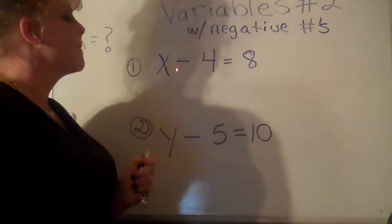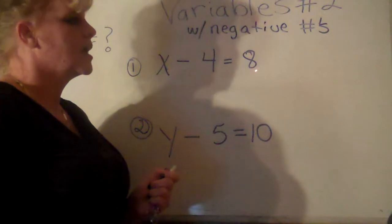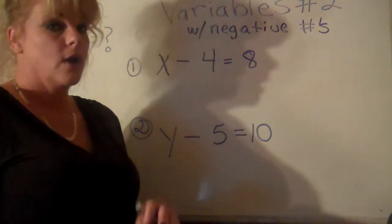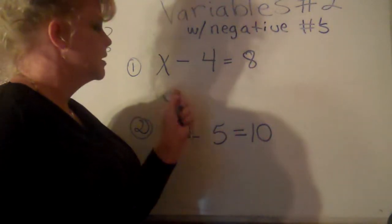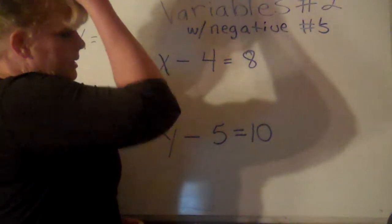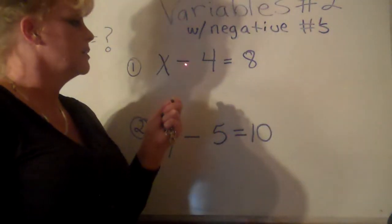This one says x minus 4 equals 8. We want to get x by itself - that's what we learned. We want to get this x by itself away from that constant, and it's a negative constant.